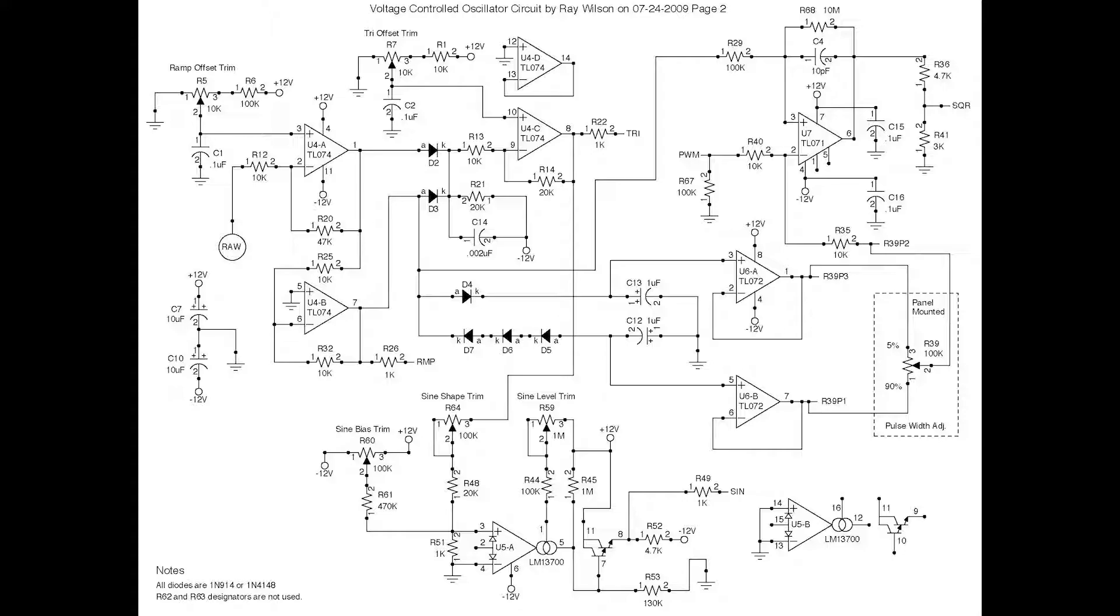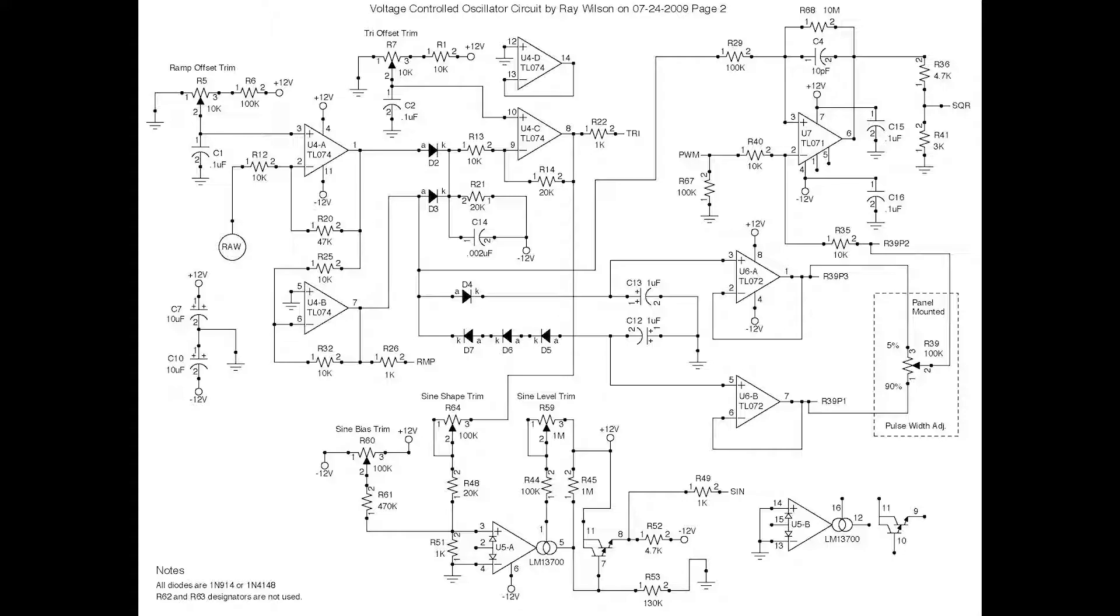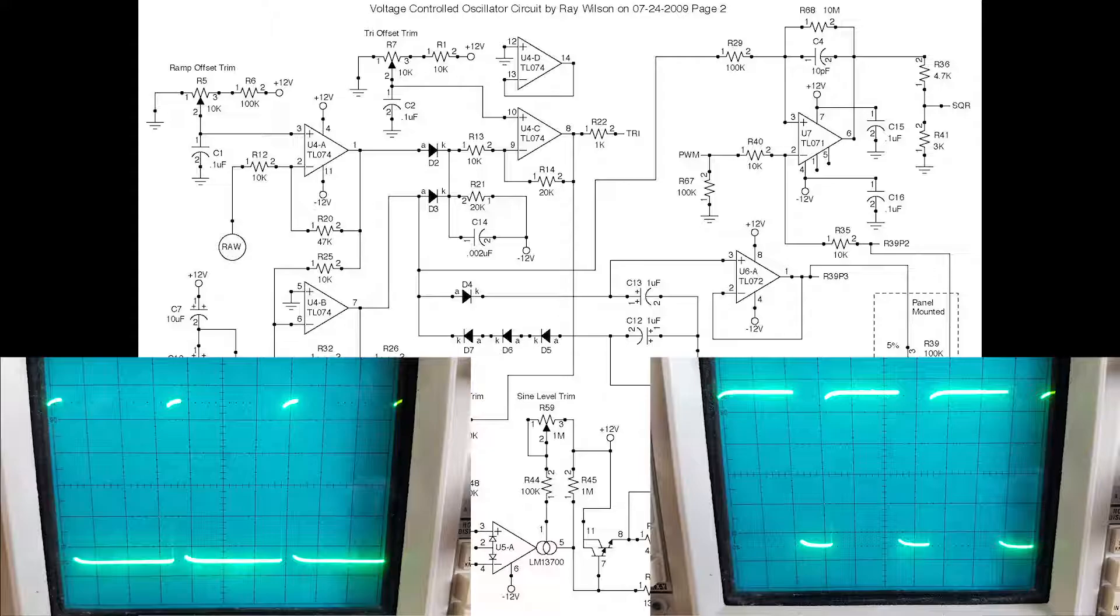And that triangle is then fed into a single op amp stage which is basically in the form of a Schmitt trigger. But that Schmitt trigger has a variable threshold. And so you can adjust the duty cycle of the square wave by adjusting where the threshold begins.